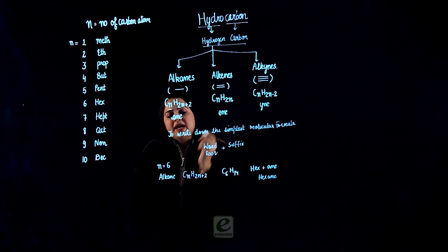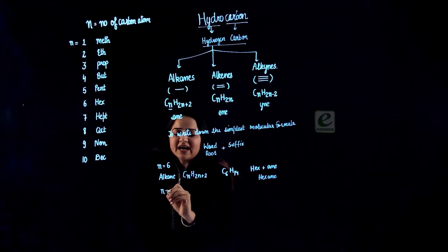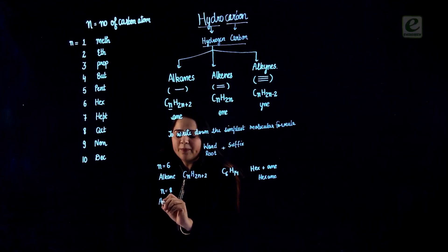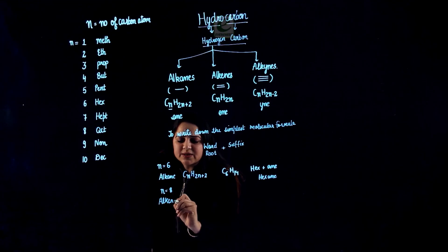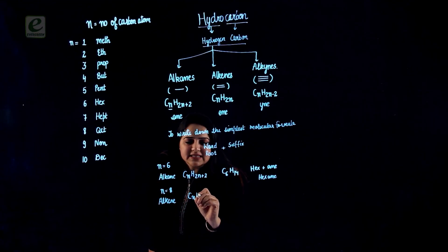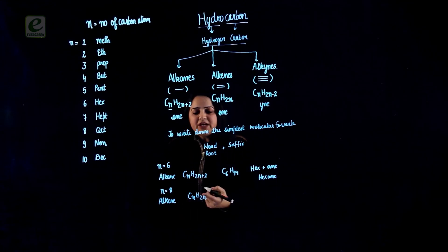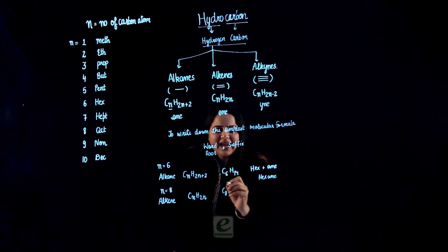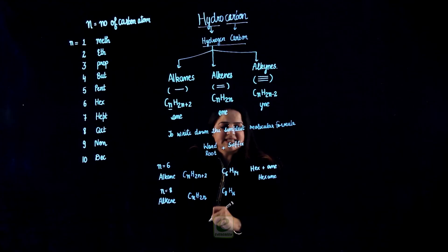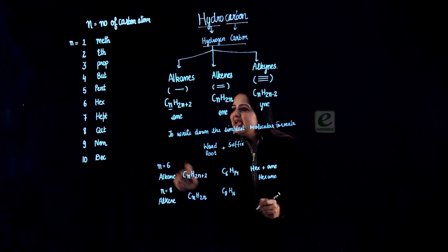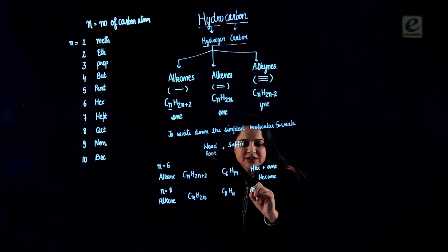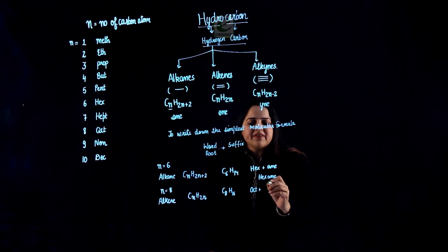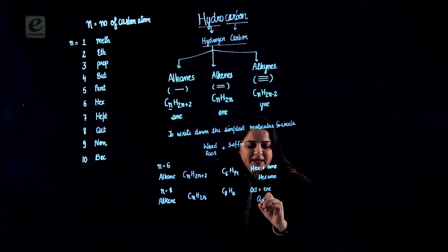Let's take another example. If I have 8 carbon atoms in the compound and that compound belongs to the group alkene, I will use the formula CnH2n. So I will get C as 8 and H will be 2 times 8, which is 16. From 8, I know that my word root is oct. And from alkene, I know that my suffix is -ene. So the name will be octene.